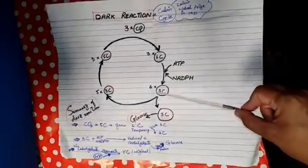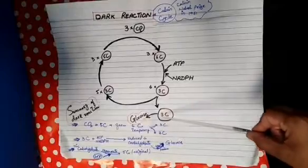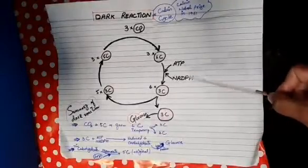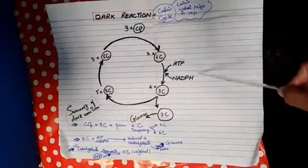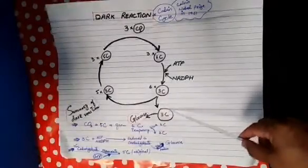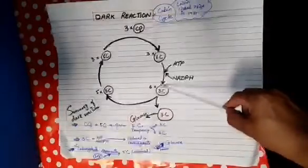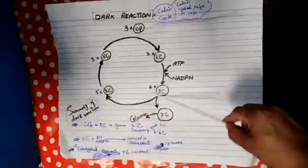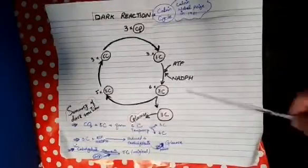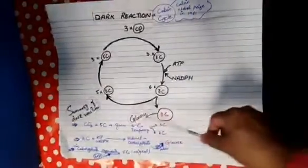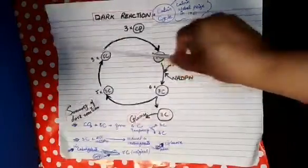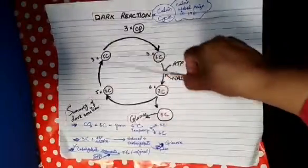These 3-carbon compounds will be reduced to 3-carbon carbohydrates by using ATP and NADPH. When reduction takes place, energy is needed from ATP and NADPH. From the 6 three-carbon compounds formed, 1 will be used to form glucose and the rest 5 will be used to form the original 5-carbon ribulose-biphosphate.